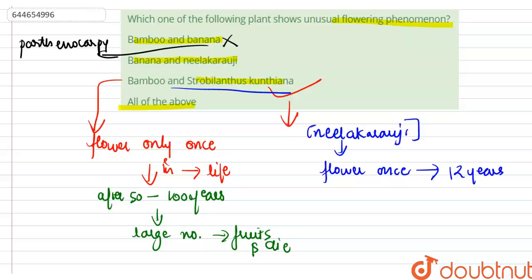Banana and neelakarogi is incorrect because banana is involved in this. All of the above is also incorrect. So the correct option for this question is bamboo and strobilanthus kuntiana.